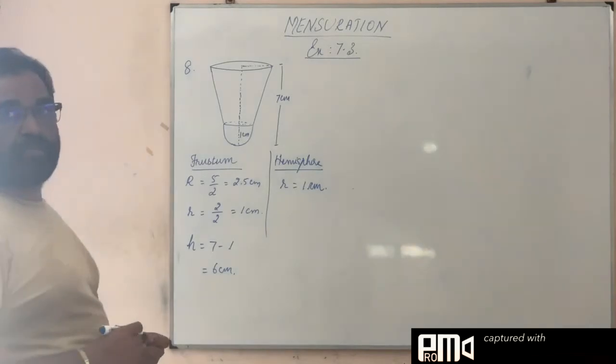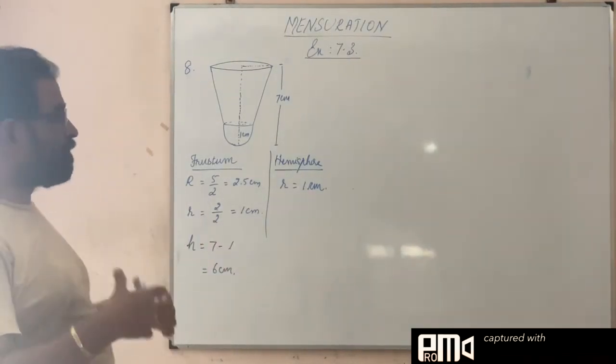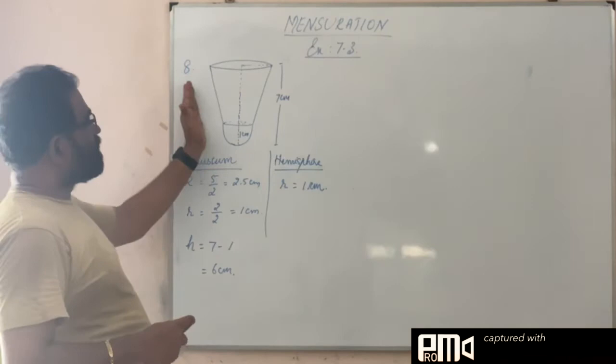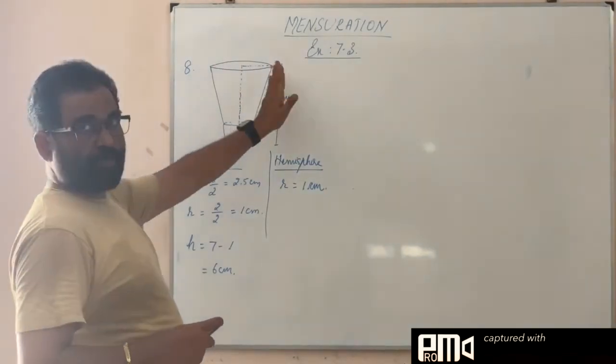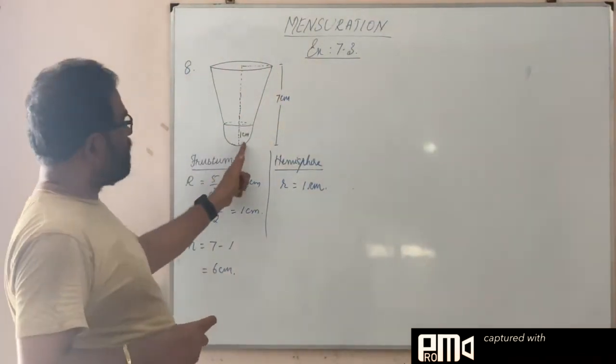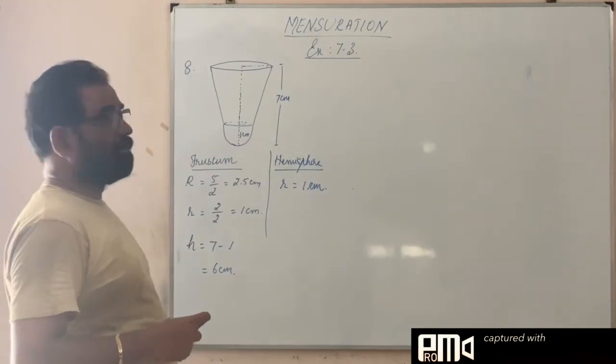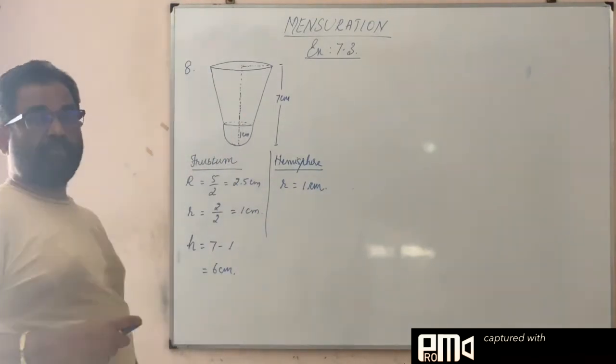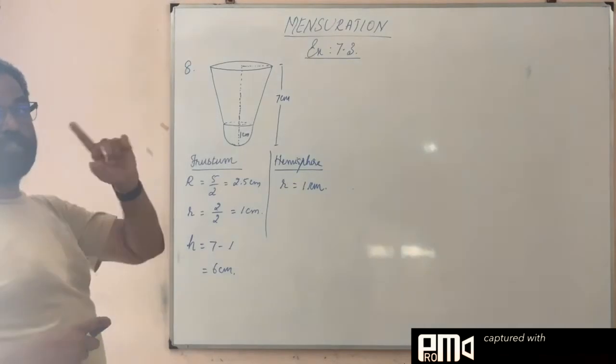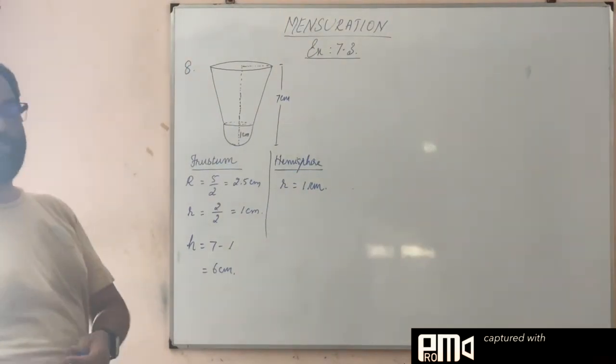We are asked to find out the external surface area, outer surface. Outer surface area means it is the CSA of the frustum plus CSA of the hemisphere. CSA of the frustum means we need to find out its slant height. So first of all, let us find out the slant height of the frustum.